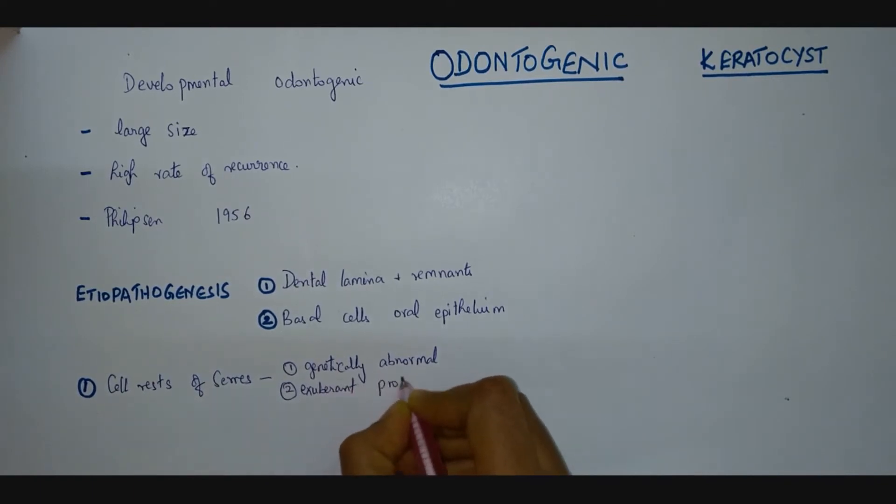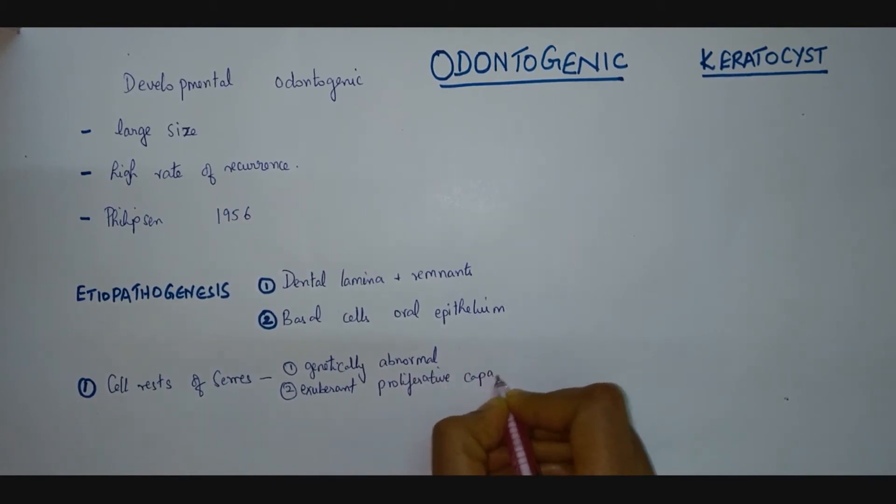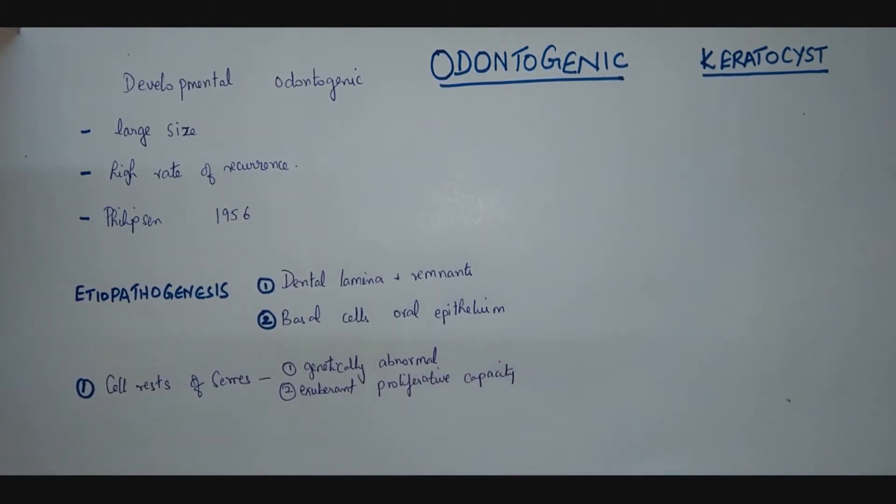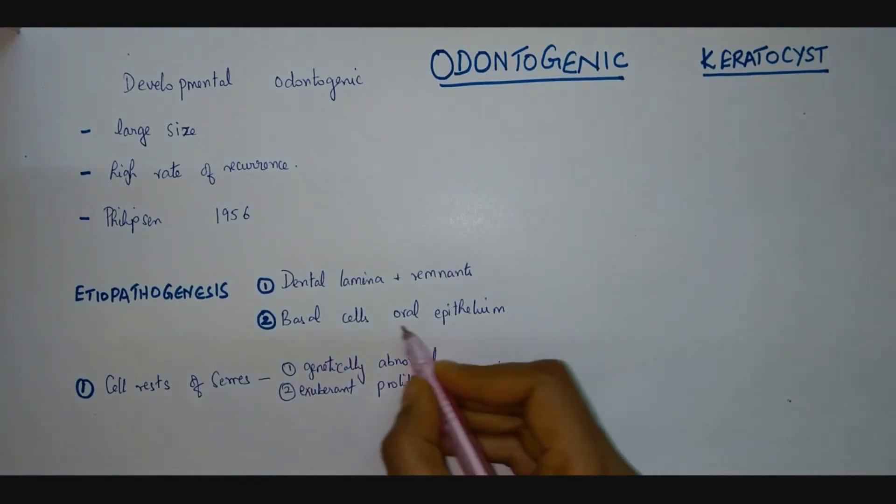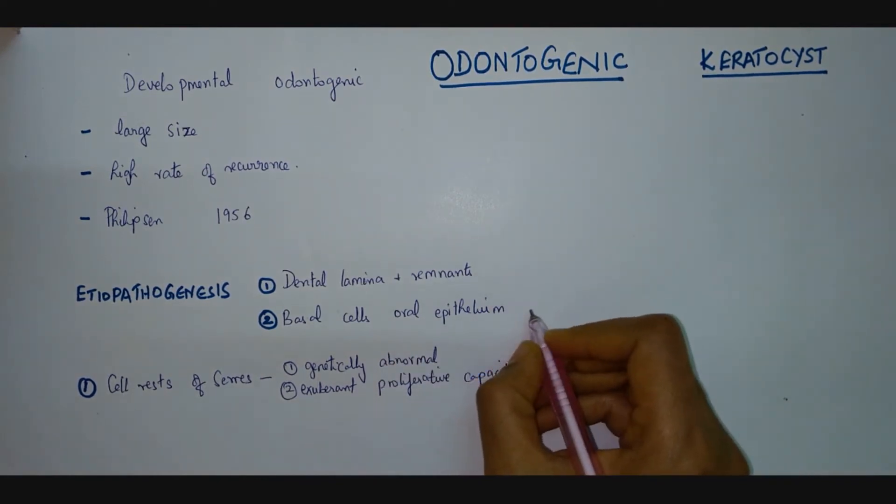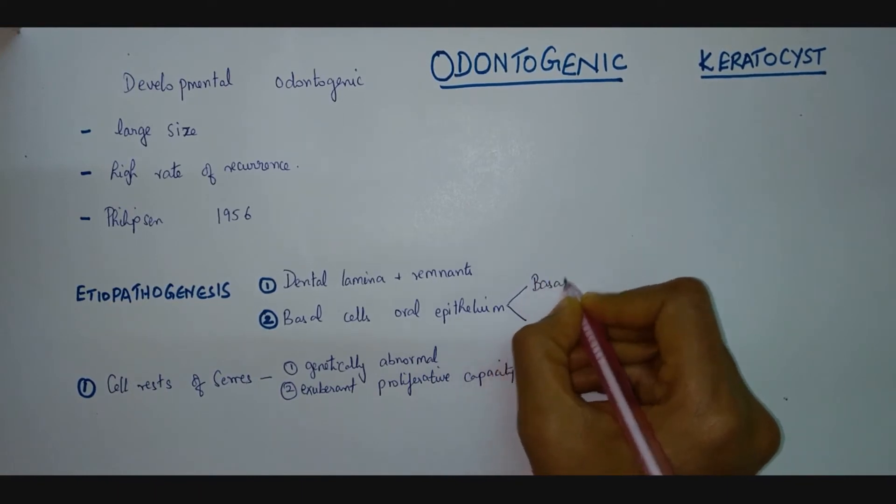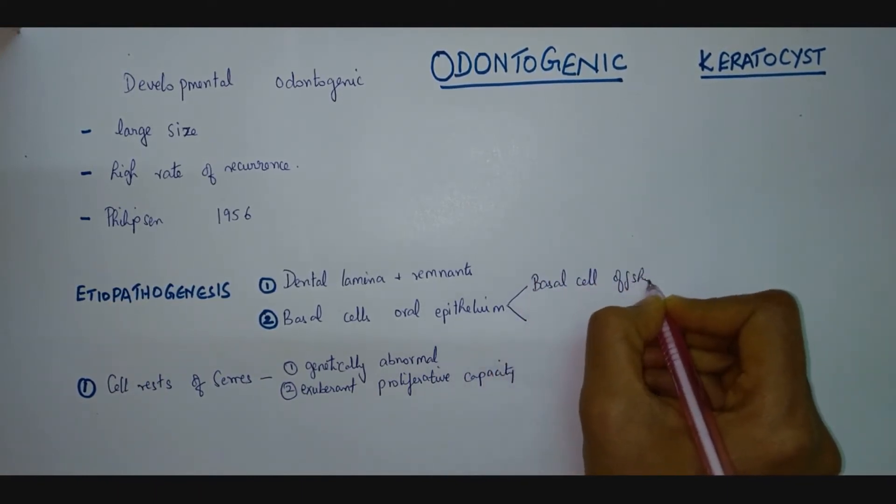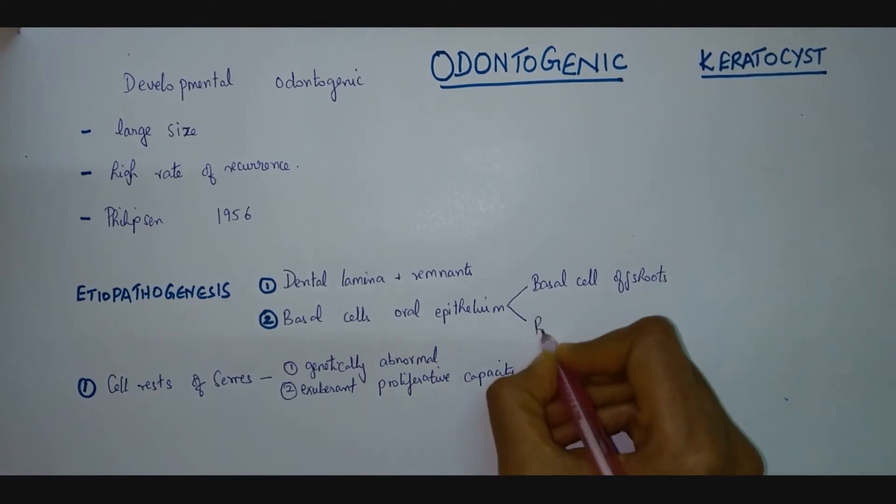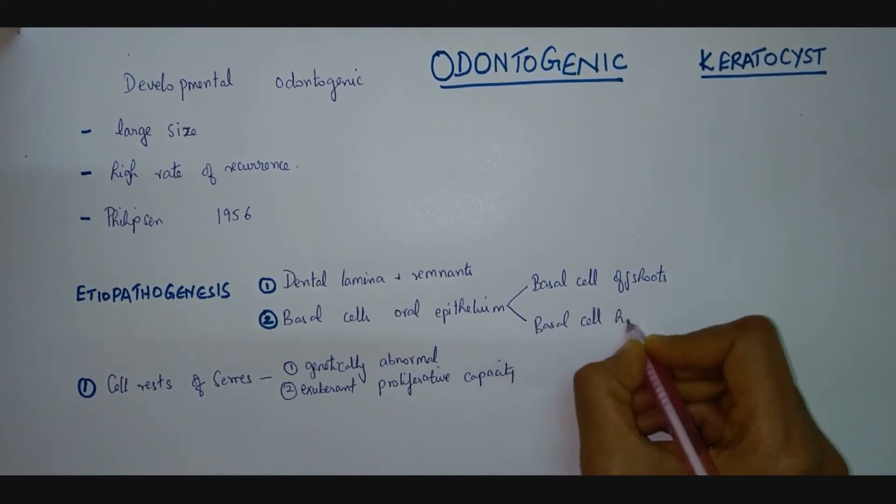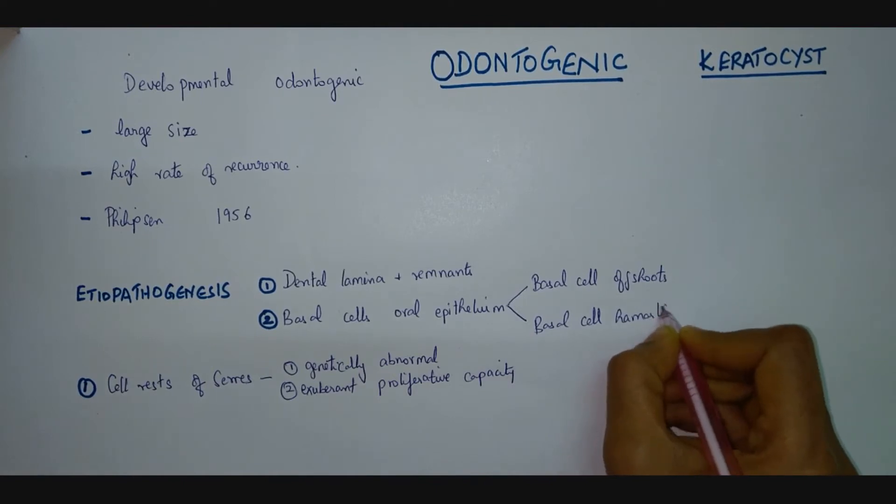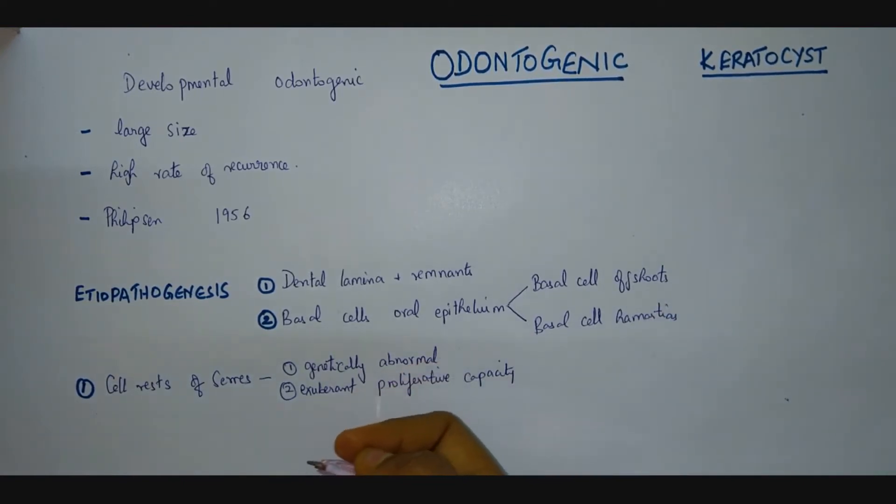Now moving on to the basal cells of the overlying oral epithelium, these are called by two names: basal cell offshoots and basal cell hamartias. Why are these suggested as the etiology for the odontogenic keratocyst? It is because of two reasons.